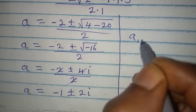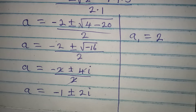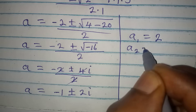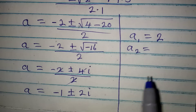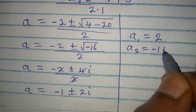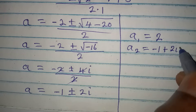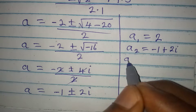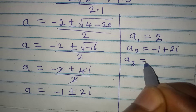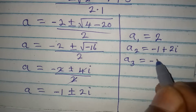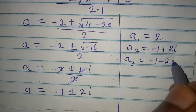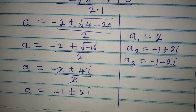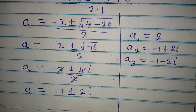The complete solution is: a₁ = 2, a₂ = -1 + 2i, and a₃ = -1 - 2i. These are the three solutions to the equation. Thank you for watching.